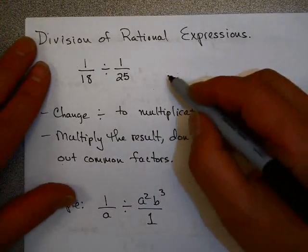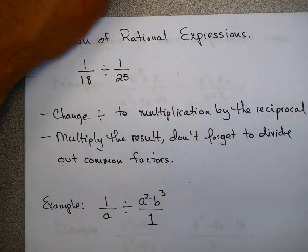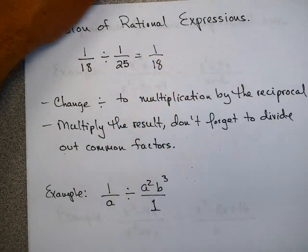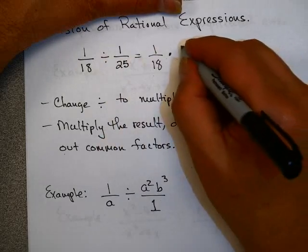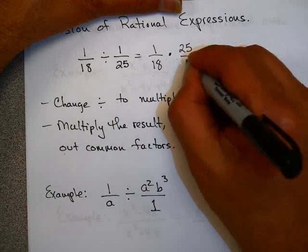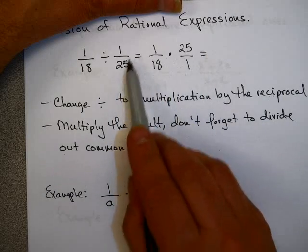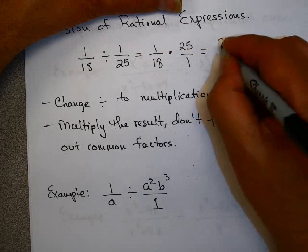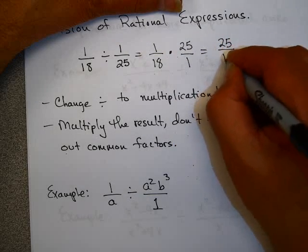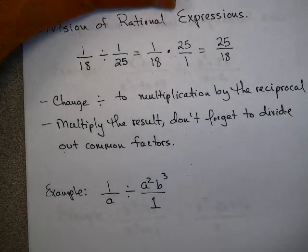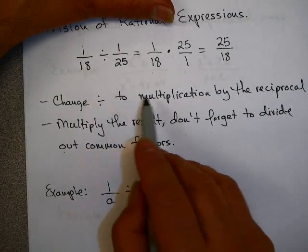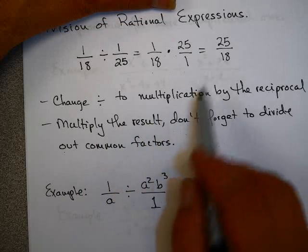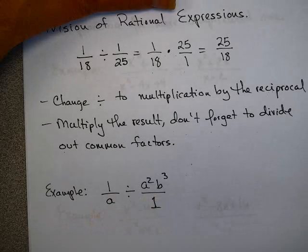What about division? You might recall from arithmetic: you take the first fraction and leave it the same, then change division to multiplication by the reciprocal — just replace the numerator and denominator, flipping the fraction to 25 over 18. So we changed division to multiplication by the reciprocal and then multiplied the result. Don't forget to divide out any common factors.